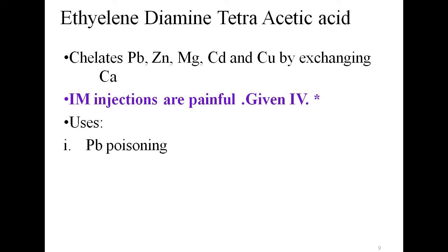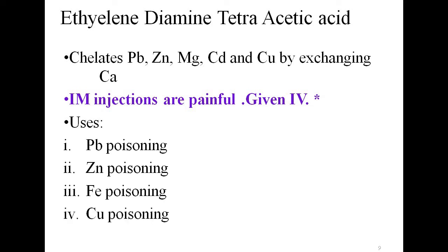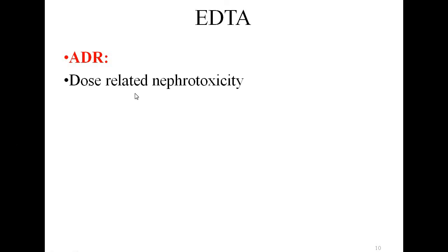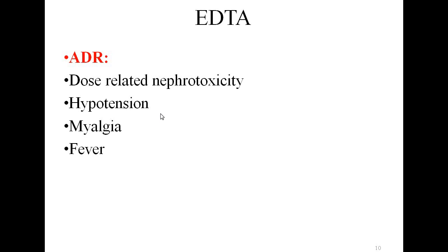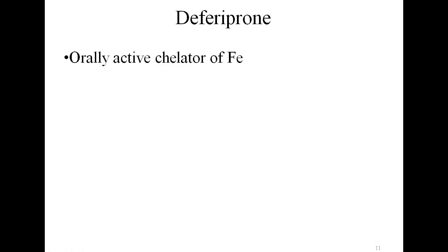EDTA is used in the treatment of lead poisoning, zinc poisoning, iron poisoning, copper poisoning, and magnesium poisoning. Adverse reactions of EDTA include dose-related nephrotoxicity, hypotension, muscle pain (myalgia), increased body temperature (fever), and sweating.